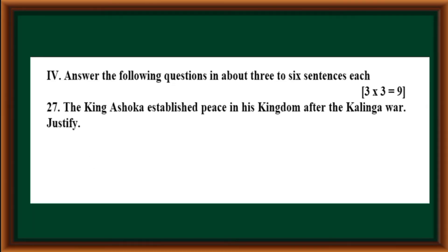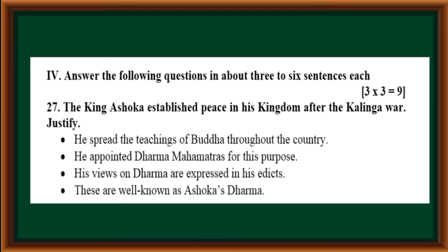Fourth main: Answer the following questions in about three to six sentences each. King Ashoka established peace in his kingdom after the Kalinga war — justified. He spread the teachings of Buddha throughout the country and appointed Dharma Mahamatras for this purpose. His views on Dharma are expressed in his edicts, well known as Ashoka's Dharma.